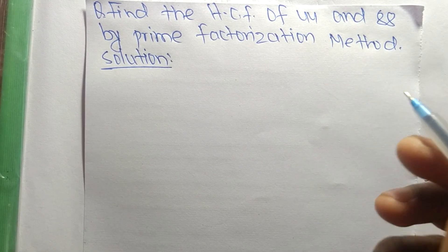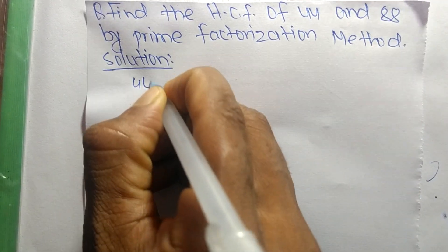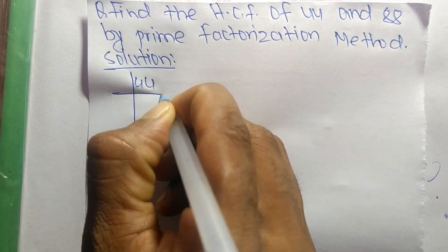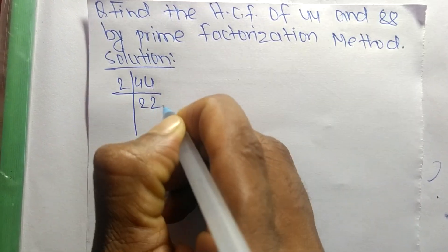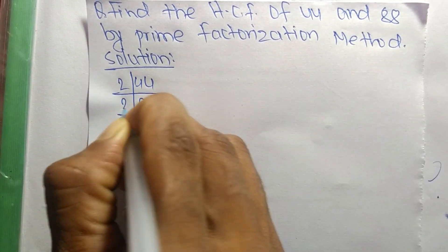First, we find out the prime factors of 44. It is 2 times 22 equals 44, then 2 times 11 equals 22.